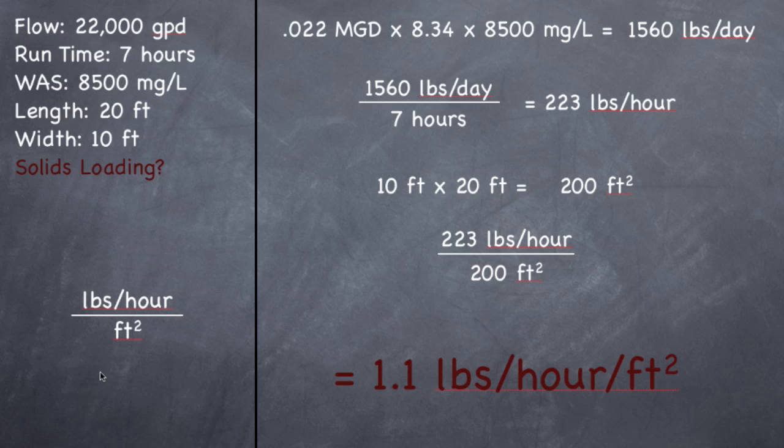Sometimes they do give you the formula on the test. So if they give you this, just find out how many pounds per hour and divide it by square feet. You only have two feet dimensions, so those are the only ones that can be square feet. On the test they might give you a depth, but depth is not part of square feet, that's part of cubic feet.